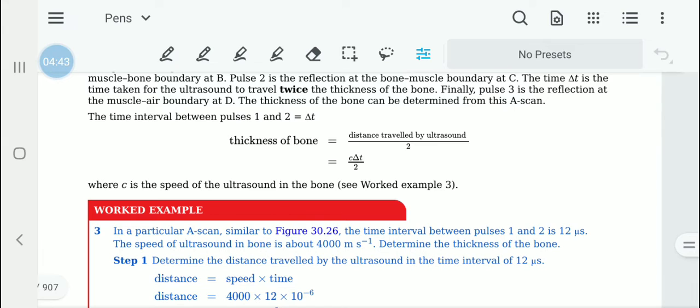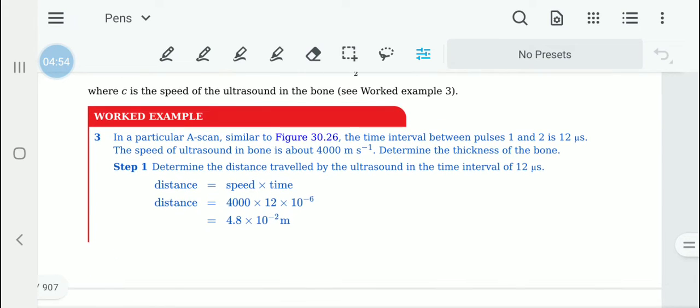C is the ultrasound speed in the bone. We are not talking about the muscles, we are talking about the bone. Now let us look at this worked example.